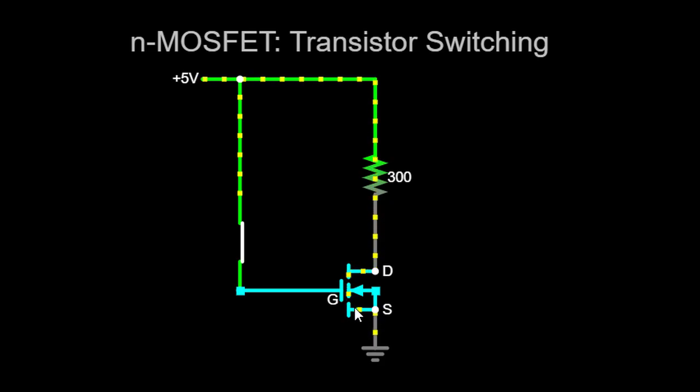As a result, a current flows from the drain to the source terminals of the transistor, passing through the resistor. The resistor acts as a current limiting component, controlling the flow of electrons.